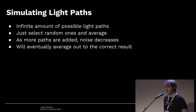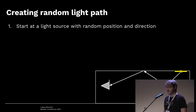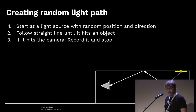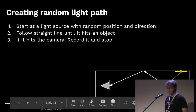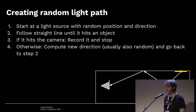How do we create random light paths? We start at the light source, pick a random position, pick a random direction in which it leaves, then follow the straight line and see where we end up. In this example we end up at the sphere. If we hit the camera we record it and stop. Otherwise we bounce off, compute a new direction based on the material, continue — then hit the ceiling, bounce again, and finally hit the camera. Path of length three — done.